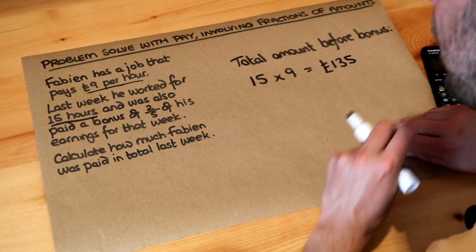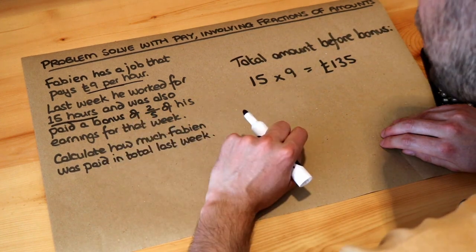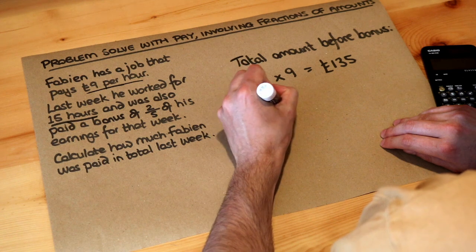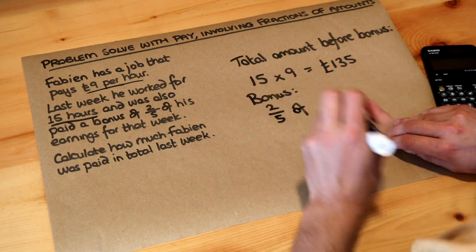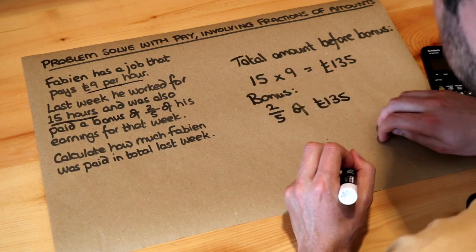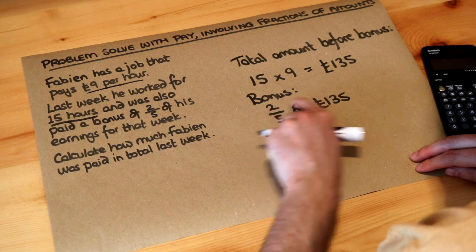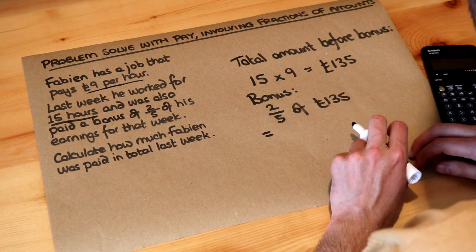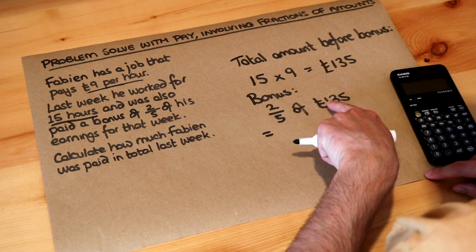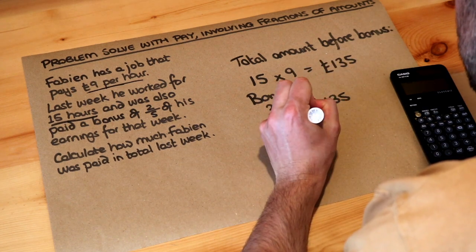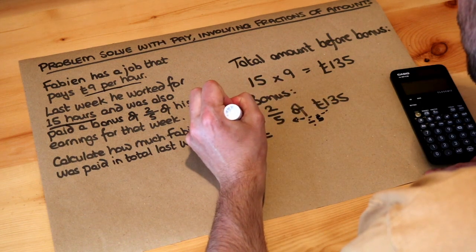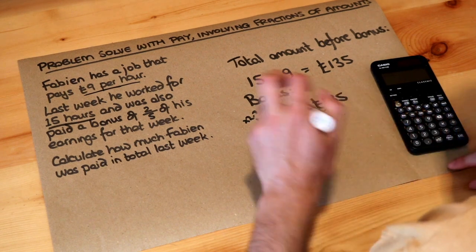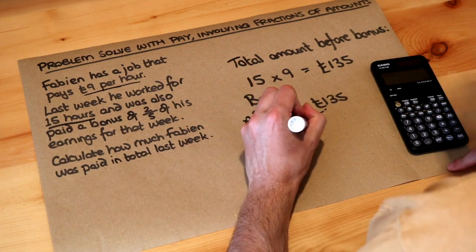It said he was paid a bonus of two-fifths of his earnings for that week, so let's work out the bonus. The bonus was two-fifths of his earnings which was £135. Now two ways we can work out two-fifths of £135: we could replace the word 'of' with times, so two-fifths times 135, or we can do 135 divided by 5 and then times by 2. So I'm going to do 135 divided by 5 times by 2, and that gives you £54. So his bonus was £54.